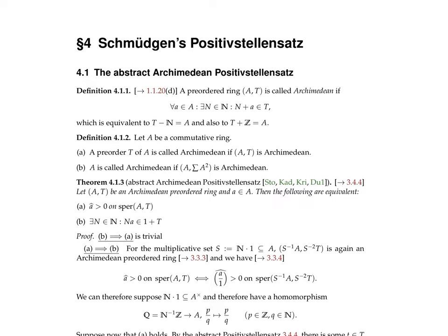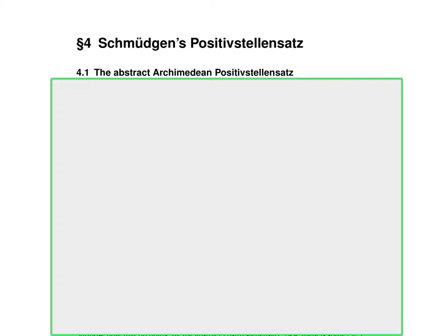Before we prove the Positivstellensatz, we prove an abstract Positivstellensatz — one without denominators. For some reason it will be called the Archimedean Positivstellensatz, because that refers to a hypothesis that is needed. This abstract Archimedean Positivstellensatz was known much longer, already before Schmittgen's famous result.